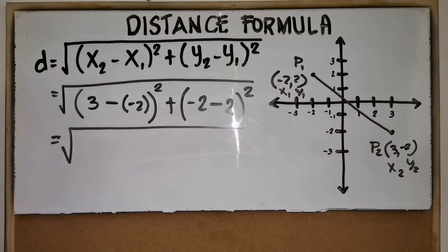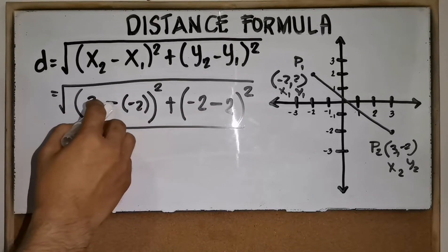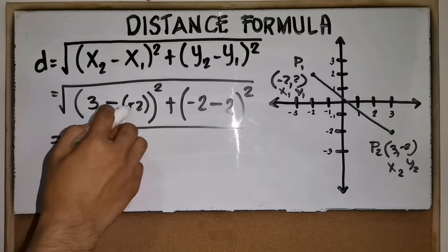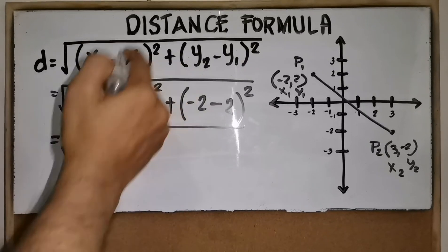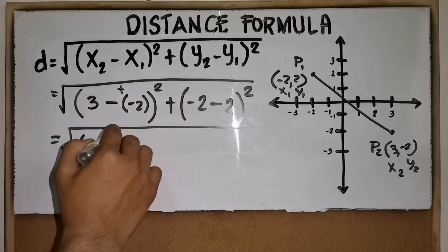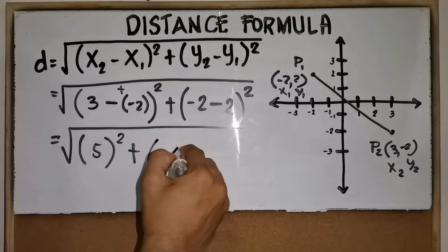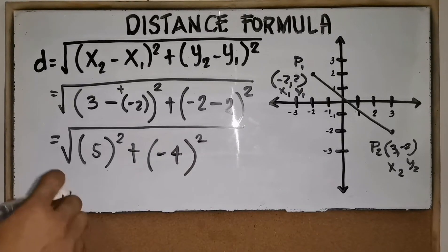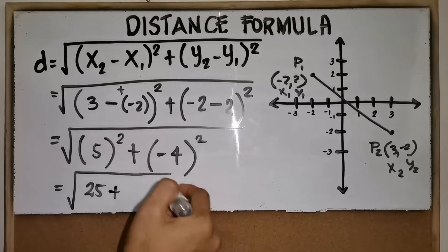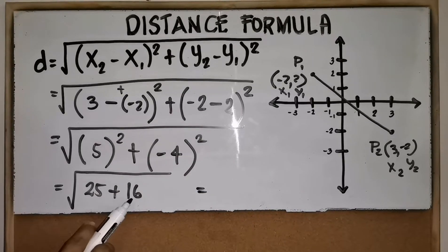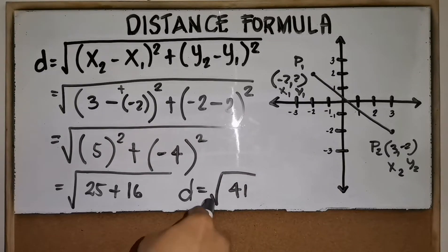Next, using PEMDAS, solve the innermost expressions first. So 3 minus negative 2 — a negative sign and a subtraction sign beside each other becomes positive — so 3 plus 2 is 5, squared. Plus negative 2 minus 2, which becomes negative 4, squared. Then 5 squared is 25 plus negative 4 squared is 16. 25 plus 16 is 41, so the answer is square root of 41.